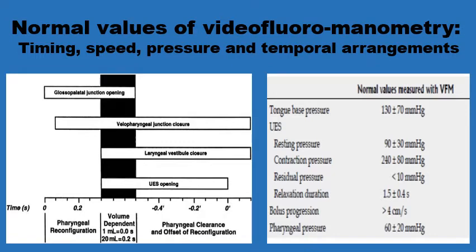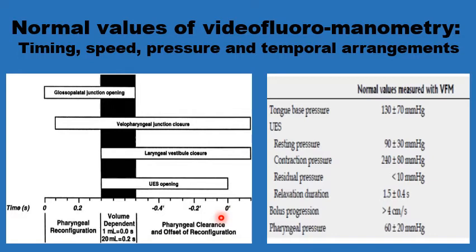The ultimate aim of pharyngeal swallowing is to transfer a well-prepared bolus from the oral cavity to the upper part of the oesophagus within one second or so, without spilling backwards into the oral cavity, upwards into the nasopharynx, or down to the larynx. The whole process should take a second or so, divided into a preparatory stage of 0.4 seconds when the pharynx is reconfigured, and then 0.6 of a second for clearance of the bolus from the pharynx into the upper oesophagus. A little more time may be required depending on the bolus physical characteristics, particularly its volume.